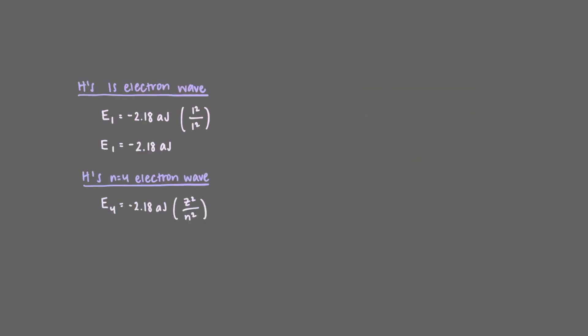Using the Bohr model equation, we can solve for the energy of an n equals 4 hydrogen atom electron. As we know, hydrogen's nuclear charge is 1. The question asks for the energy of an n equals 4 hydrogen atom electron, so we will substitute n in the equation with 4. This gives us E sub 4 equals negative 0.136 attojoules.